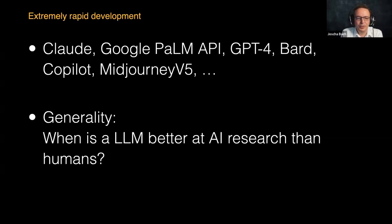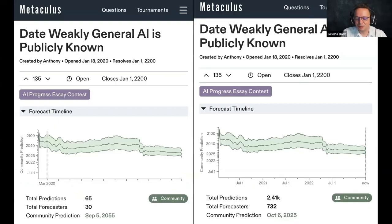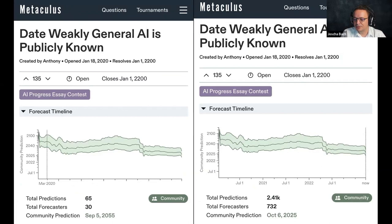This principle has led to extremely rapid development in the last few years. This leads us to the question: when does a language model become better at AI research than humans? That's an interesting criterion for general generality, because whatever generality is missing can then be left to the system. Because of this rapid progress, many people now feel the possibility of AGI has changed dramatically. If you look at the forecasting platform Metaculus, predictions have reduced from around 2055 to 2025, and many people are expecting a broadly general AI system to be publicly known within a relatively short time.